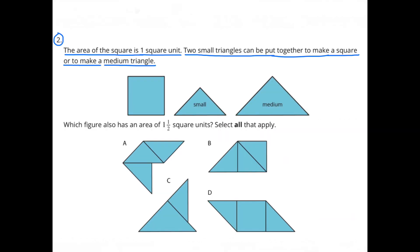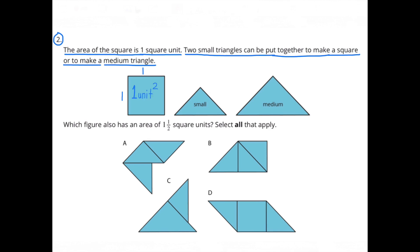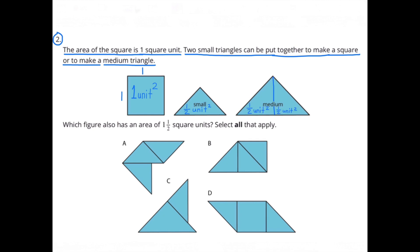Number 2. The area of the square is one square unit. Two small triangles can be put together to make a square or to make a medium triangle. So the square is one by one, which is one square unit. The small triangle is a half a unit squared, and the medium triangle is one unit squared.